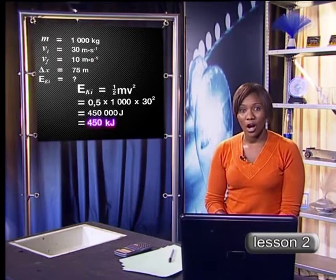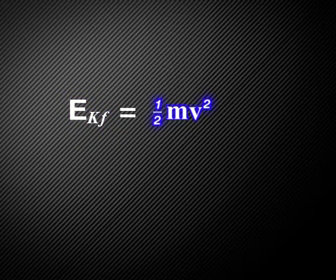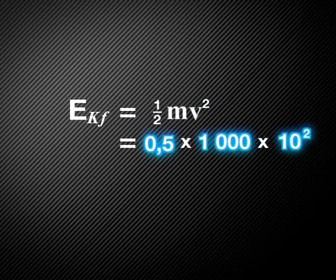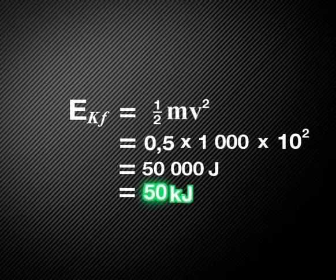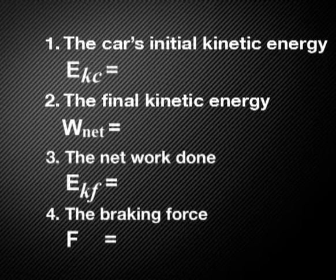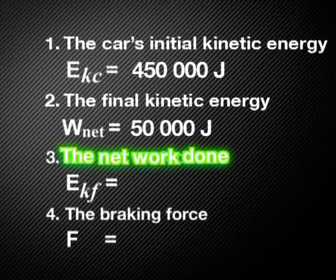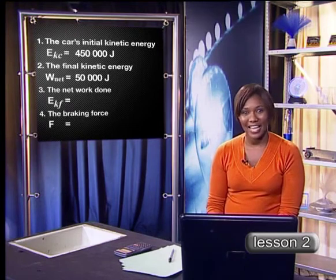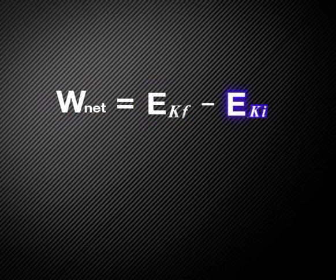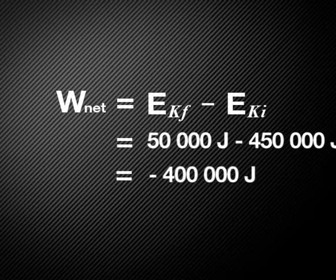We can find the final kinetic energy of the car using the same equation. Final kinetic energy equals half times 1,000 times 10 squared, so the answer is 50,000 joules, which is the same as 50 kilojoules. We have now answered the first two questions: the initial kinetic energy is 450,000 joules, and the final kinetic energy is 50,000 joules. Next, we need to find the net work done, which equals the change in kinetic energy. Using the work-energy theorem: net work equals final kinetic energy minus initial kinetic energy, giving us minus 400,000 joules.